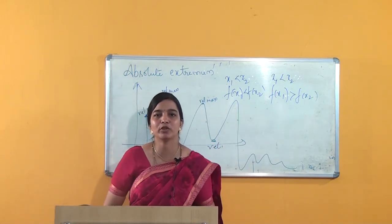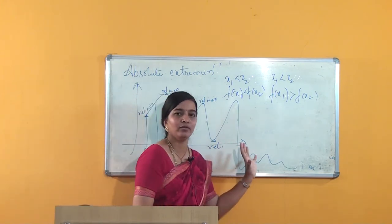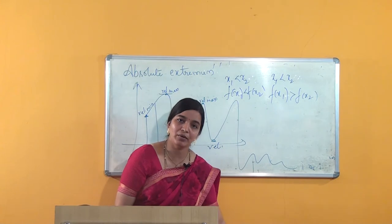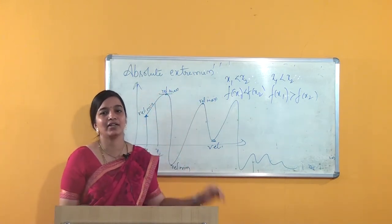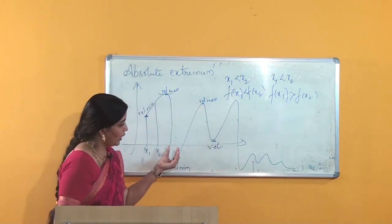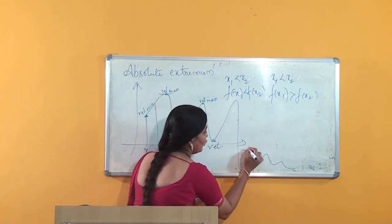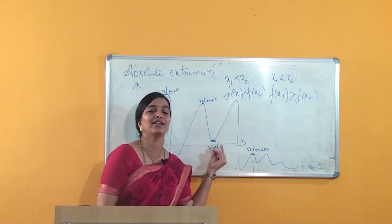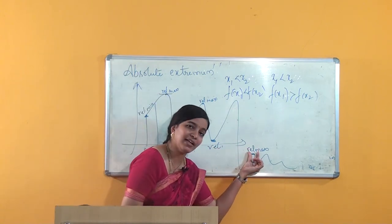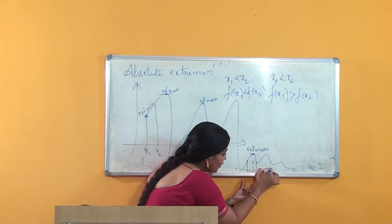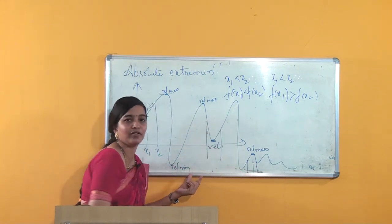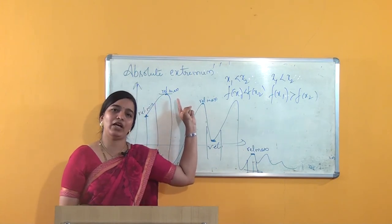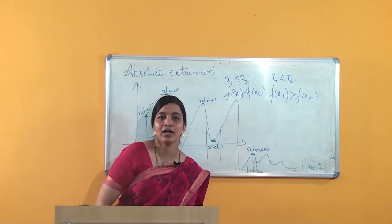But what is absolute maximum and absolute minimum value? Throughout the entire graph, where the graph attains the minimum value — that is the absolute minimum value. Where the graph attains the maximum value — that is the absolute maximum value. Note that one relative maximum value can actually be less than another relative minimum value, but we consider it relative maximum only within its local interval. Absolute maximum and minimum are considered over the entire graph.